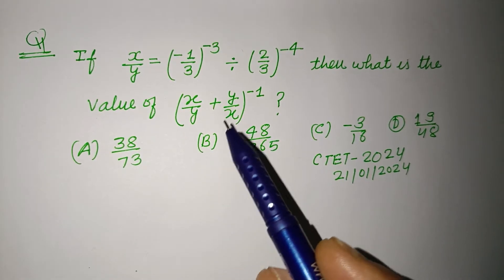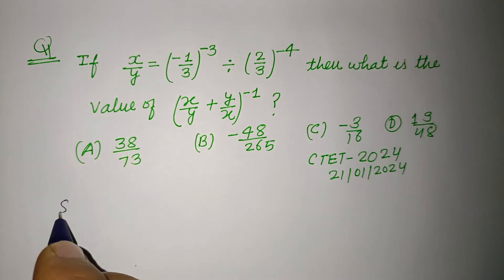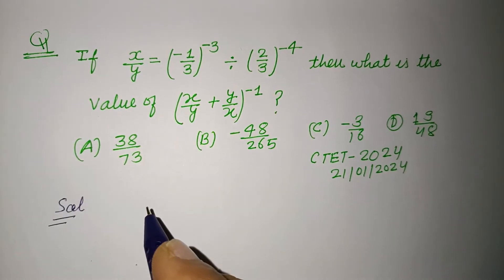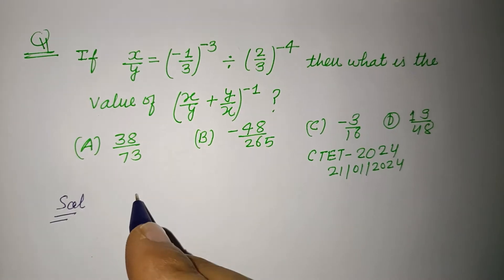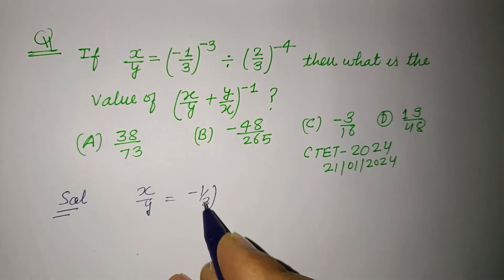...value of (x/y + y/x)^(-1)? So student, this question is based on exponent and inverse of the number. So x/y is given to us as (-1/3)^(-3) divided by (2/3)^(-4).